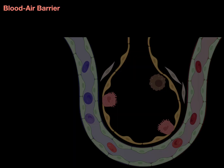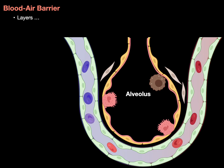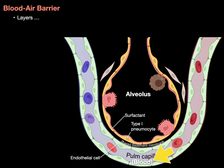Putting these concepts together: the blood-air barrier is the interface of type 1 pneumocytes, their fused basement membranes, and endothelial cells, allowing the rapid diffusion of gases. The layers are: surfactant, type 1 pneumocyte, the shared basement membrane, and the endothelial cell of the pulmonary capillary.